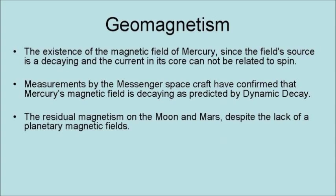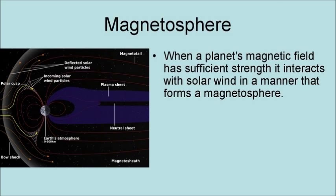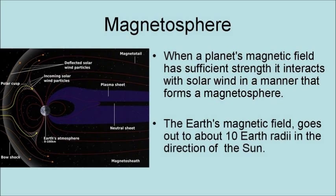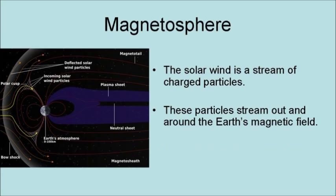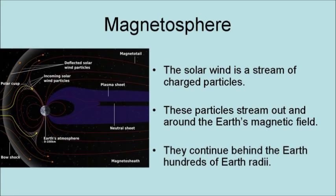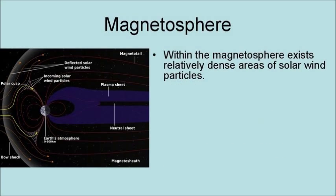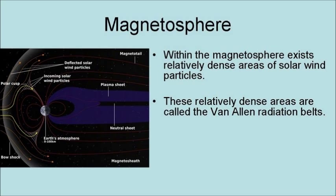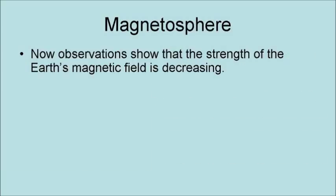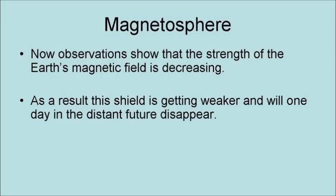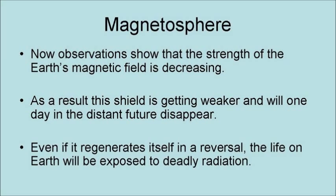Dynamic Decay Theory also explains residual magnetism on the Moon and Mars despite the lack of a present planetary magnetic field. When a planet's magnetic field has sufficient strength, it interacts with the solar wind in a manner that forms the magnetosphere. The Earth's magnetic field extends out to about 10 Earth radii in the direction of the Sun. The solar wind is a stream of charged particles that stream out and around the Earth's magnetic field and continue behind the Earth for hundreds of Earth radii. Within the magnetosphere exist relatively dense areas of solar wind particles called the Van Allen radiation belt. This process forms a shield protecting the Earth from normal solar winds and solar storms. However, observations show that the strength of the Earth's magnetic field is decreasing, so this shield is getting weaker and will one day disappear. Even if it regenerates itself in a reversal, life on Earth will be exposed to deadly radiation.